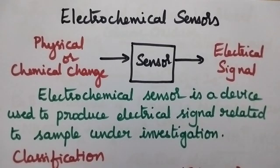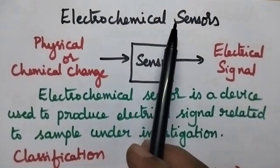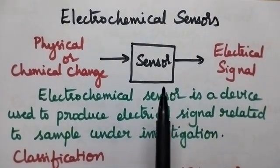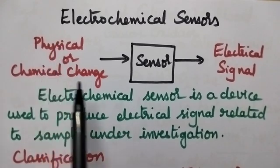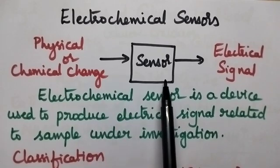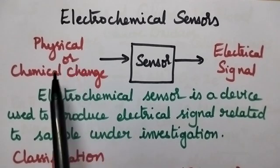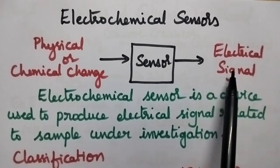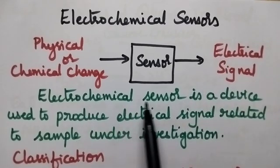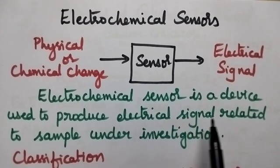Hello students, welcome back to my channel. In this video I am going to discuss in brief about the electrochemical sensors. A sensor is a device which is used to detect physical or chemical change and to produce an electrical signal. An electrochemical sensor is a device used to produce an electrical signal related to the sample under investigation.